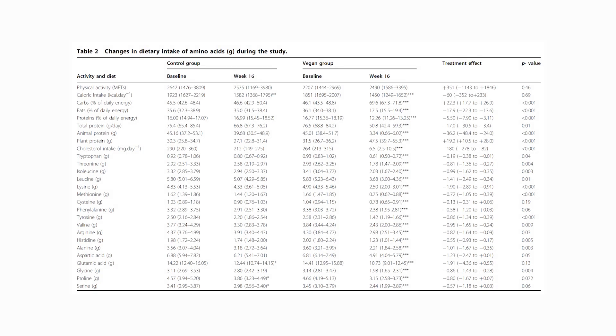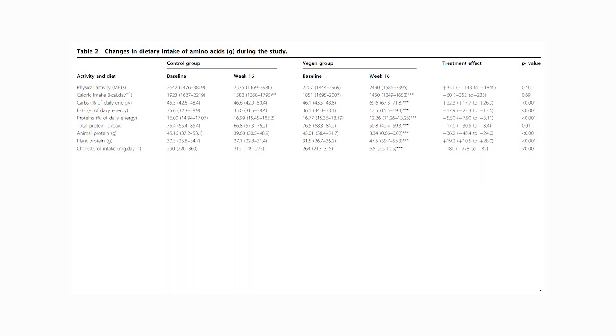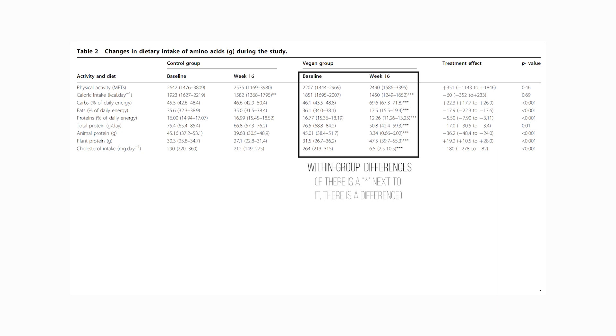Here is where things start getting a little bit wonky right from the first figure or table we're going to be looking at. This table shows a ton of information, most of it dominated by the amino acids that make up each of their conditions — so for the vegan group, how much of each amino acid did they consume, how much total protein, how many calories, physical activity, energy expenditure, and things of that nature. Then they did the exact same thing for the control group.